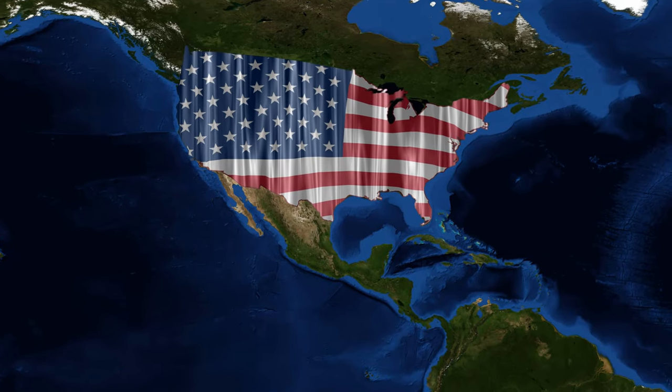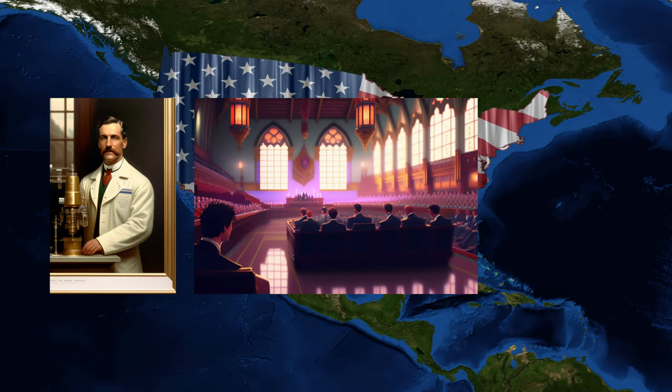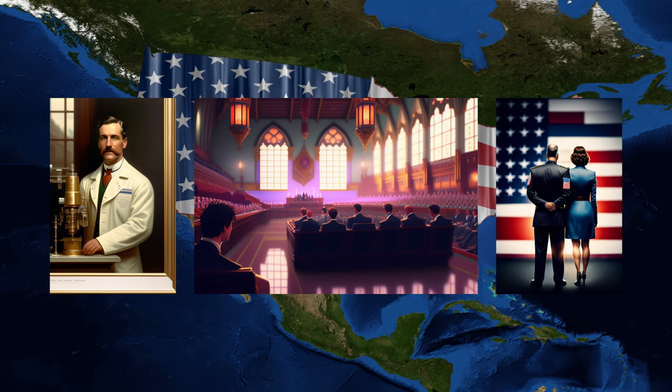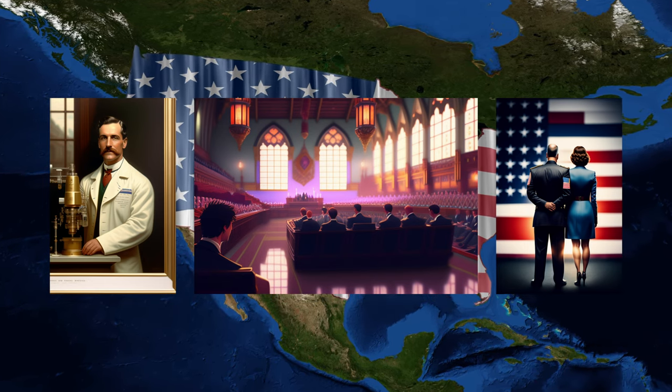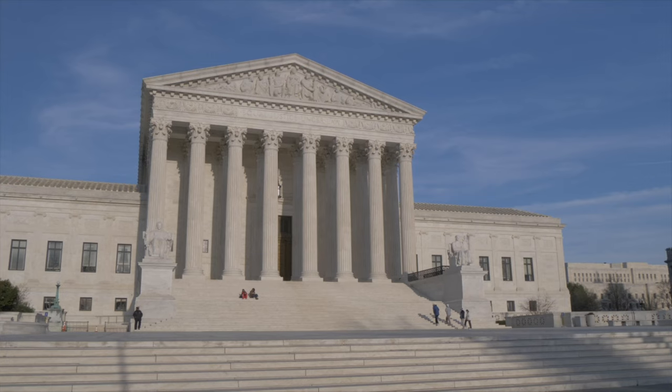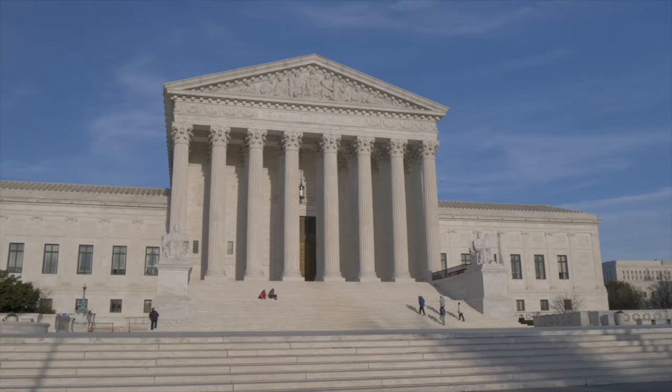In the United States, eugenics gained widespread support from scientists, politicians, and the public. Many states passed laws that allowed for the sterilization of individuals with mental illnesses, developmental disabilities, and other undesirable traits. These laws were upheld by the Supreme Court in the landmark case of Buck v. Bell in 1927.